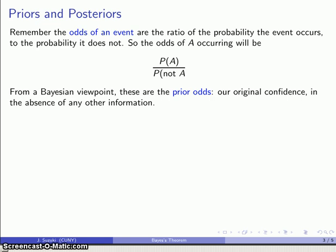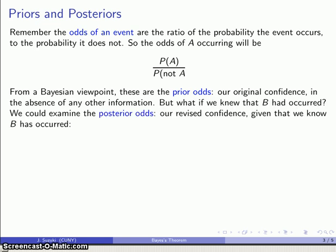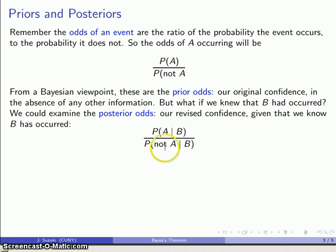On the other hand, suppose that I know some other event has occurred — what if I knew that B has occurred? We can then reconsider our estimate of the odds. We can look at what's called the posterior odds: the revised level of confidence that event A has occurred, expressed as the probability that A has occurred given B, over the probability that A has not occurred given B.